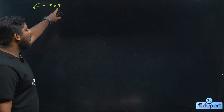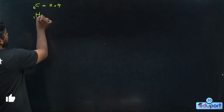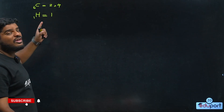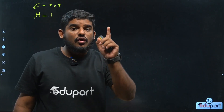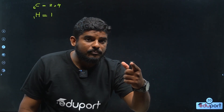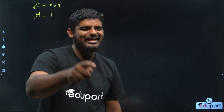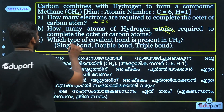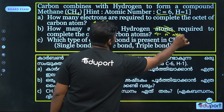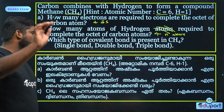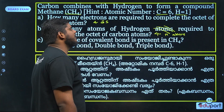Carbon will complete its octet. The hydrogen atom has 1 electron. Carbon needs 4 more electrons to complete its octet, so 4 hydrogen atoms are required. Which type of bond is present in CH4?